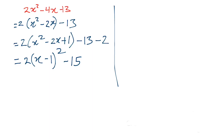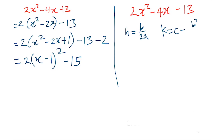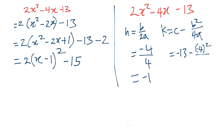Some people may want to use the formula method, so let's do that with 2x² - 4x - 13. Using the formula method: h = -b/2a and k = c - b²/4a. So h = -(-4) / (2×2) = 4/4 = negative 1. And k = c, which is negative 13, minus b² which is (-4)² = 16, over 4a which is 8.